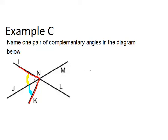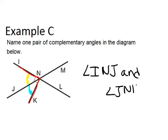So let's name those angles. That's angle INJ, that's the yellow one, and angle JNK, that's the blue one. Those are two angles in this picture that are complementary.